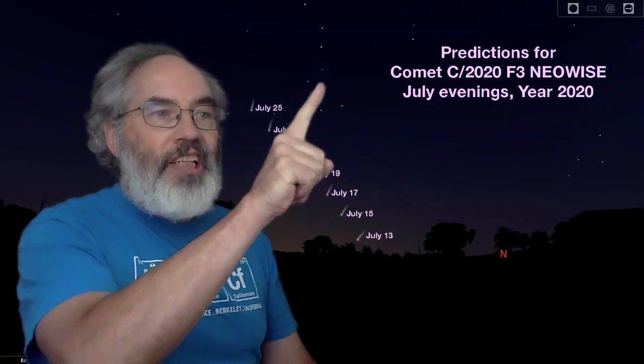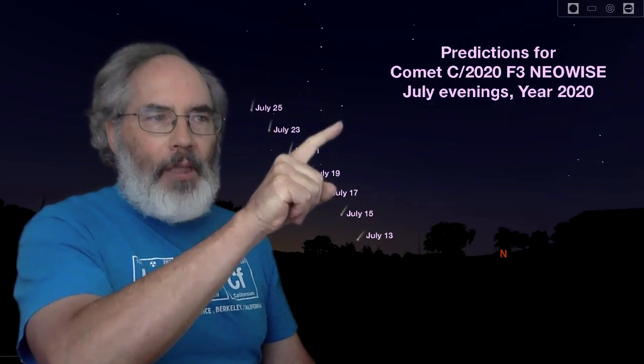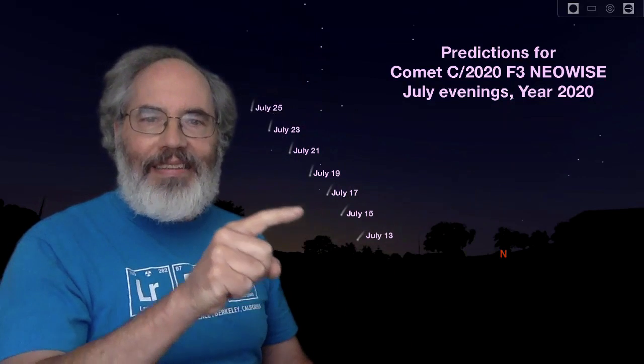Maybe you know this group of stars. One, two, three, four, five, six, seven. That's the Big Dipper. So use this diagram and the Big Dipper as a guide to where to look to see this comet.